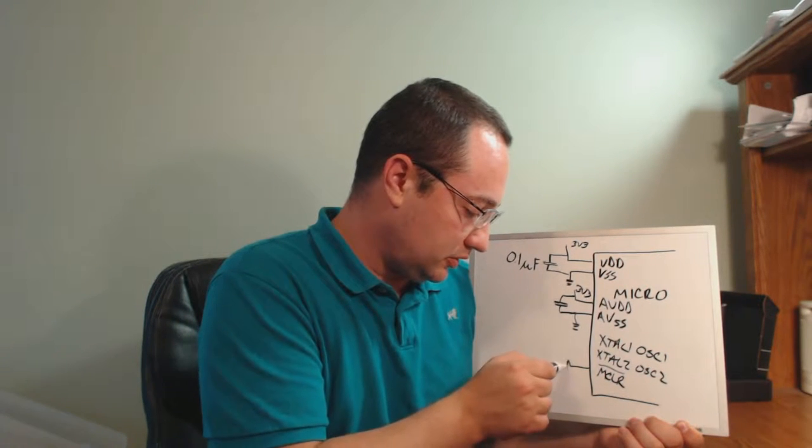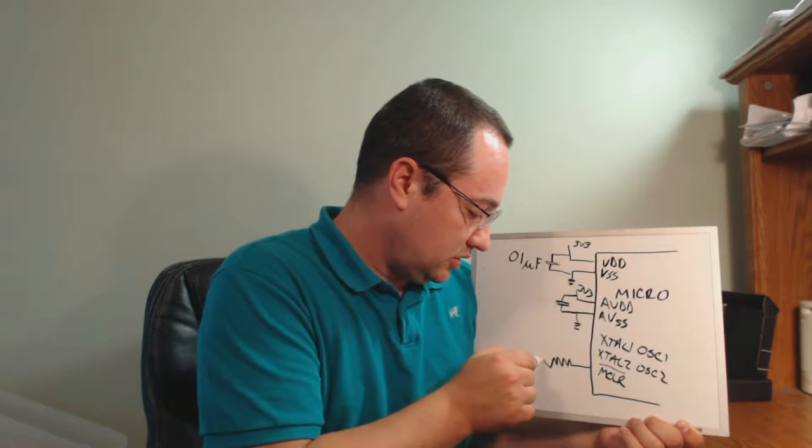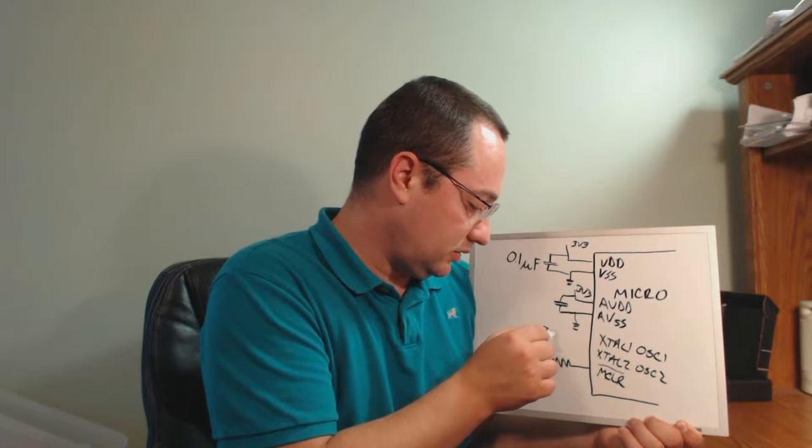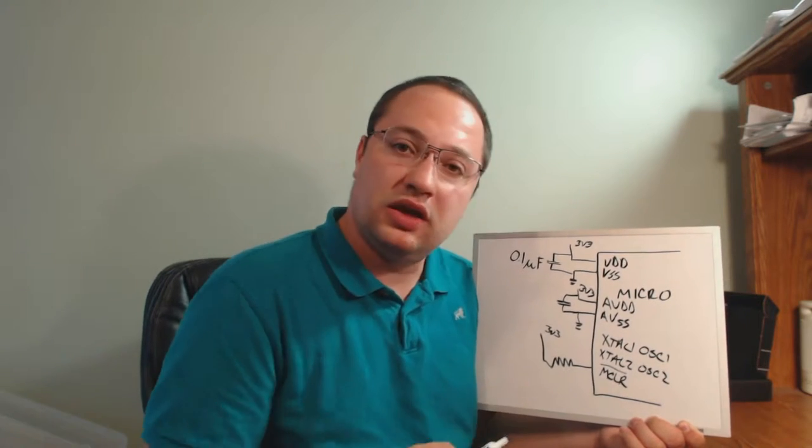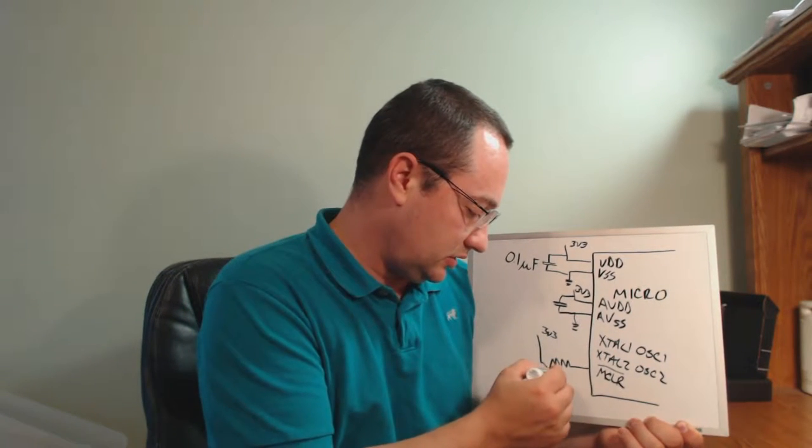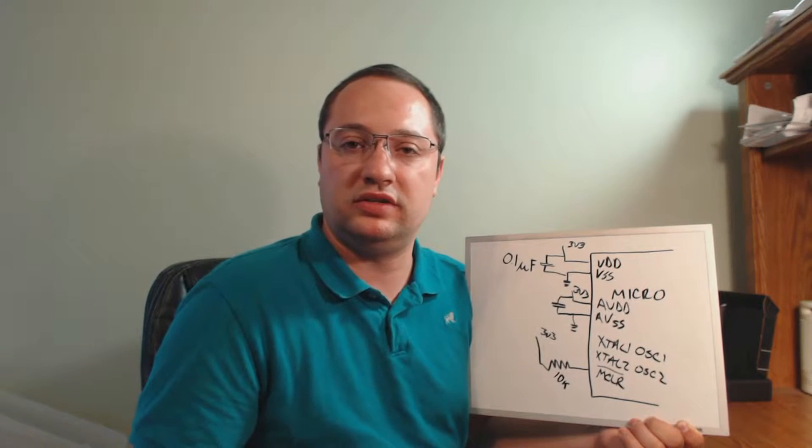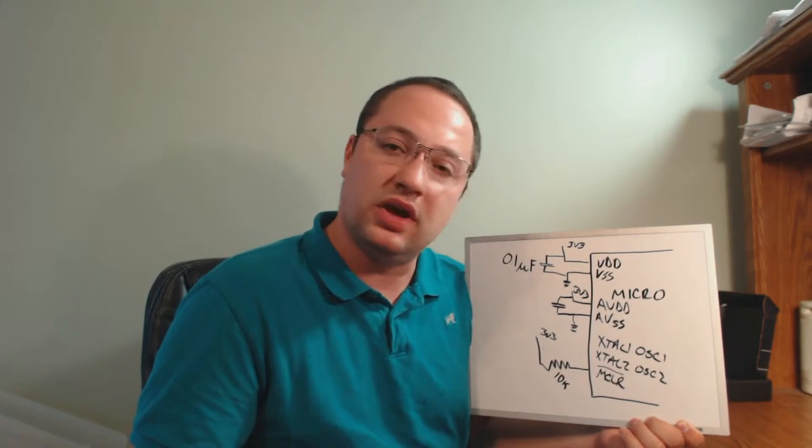This pin actually needs to be pulled up with a resistor to 3V3 just like that, and this resistor is generally a 10k which is a soft pull up. It's kind of a standard value as well for the MCLR pin.